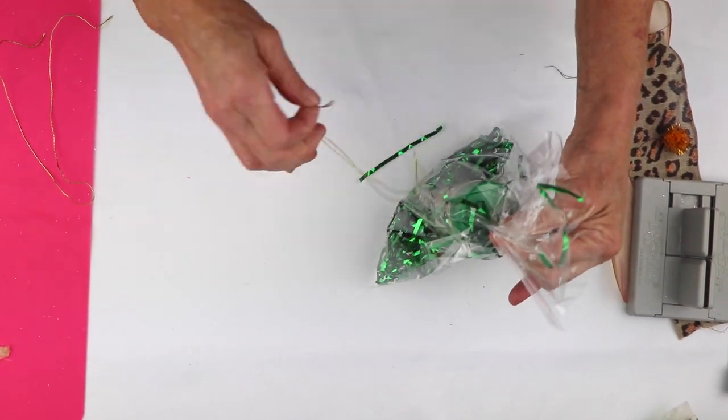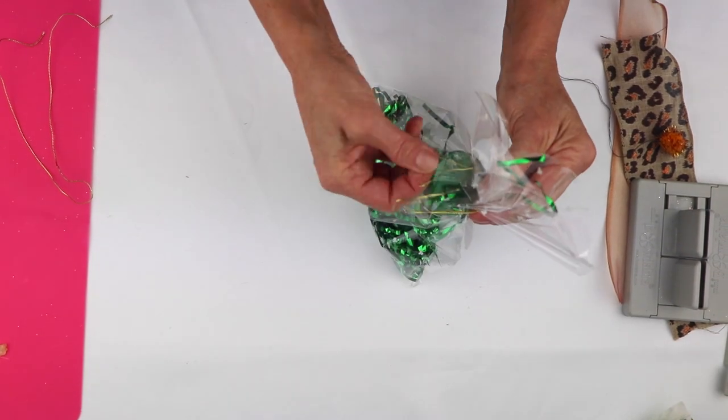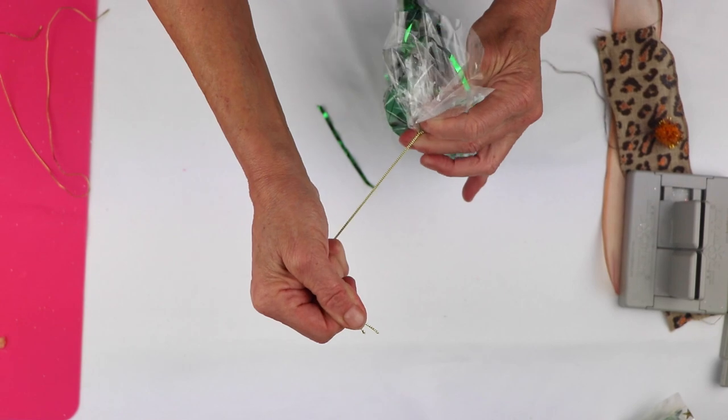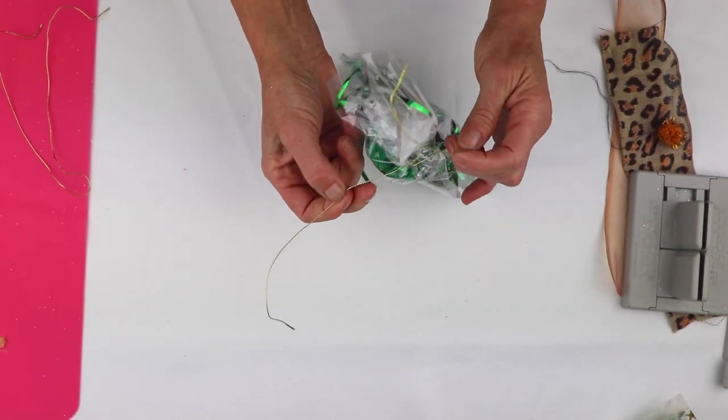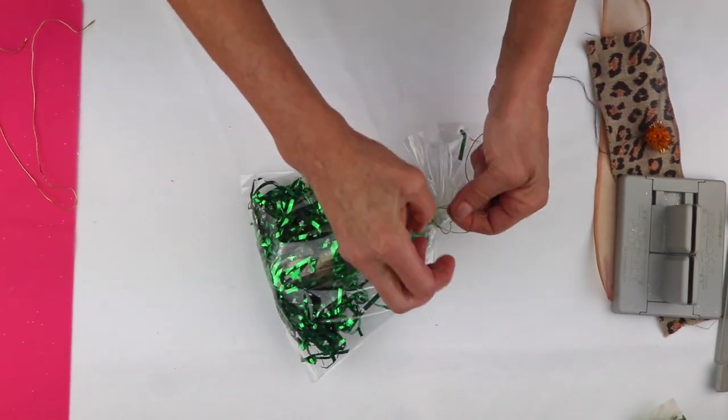And I'm going to take my wire, which I've already folded in half. And I'm just going to pull this through a slipknot and bring it around, again, bring it around to the back and just going to tie a knot.